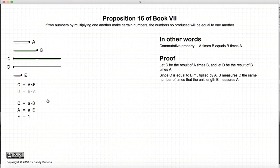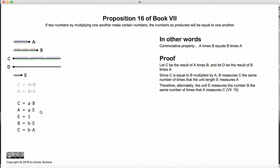Now, since c is equal to a times b, here's where the definition of multiplication comes in. If c is equal to a times b, that means that b measures c the same number of times as the unit measures a. So again, remember this is the definition of multiplication.